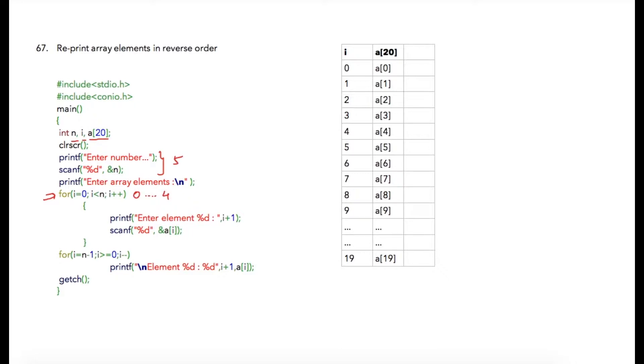If user has entered let's say five then this for loop will execute for five times starting from zero till four and then I am going to accept these array elements and those values will be stored subsequently starting from array of zero, array of one, array of two and so on till array of four.